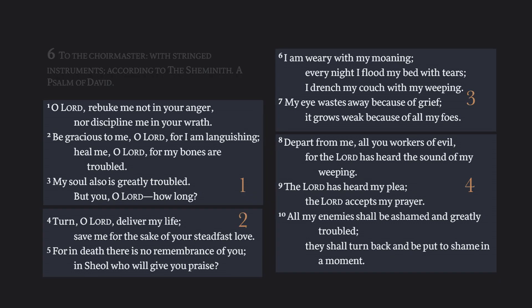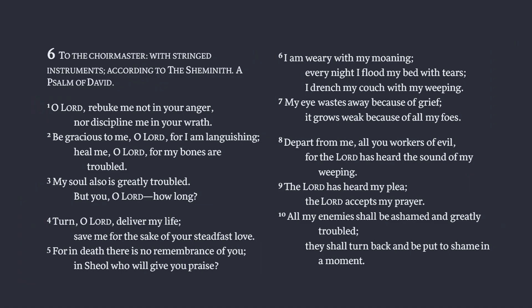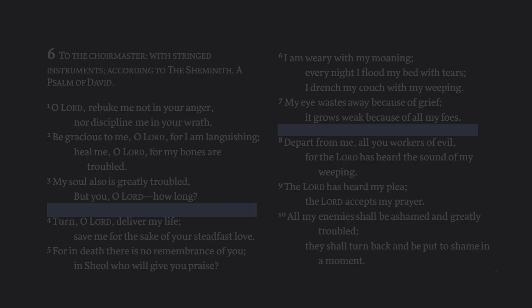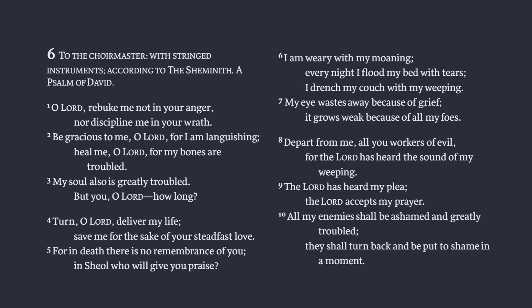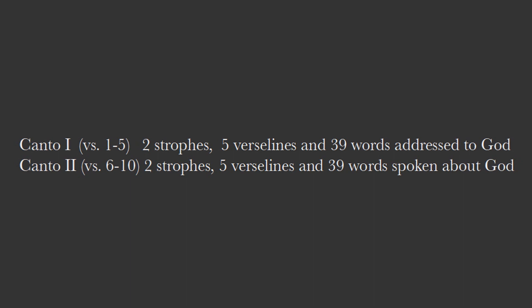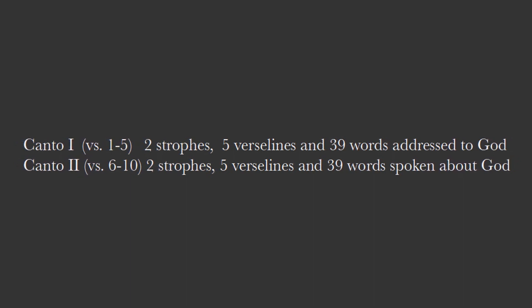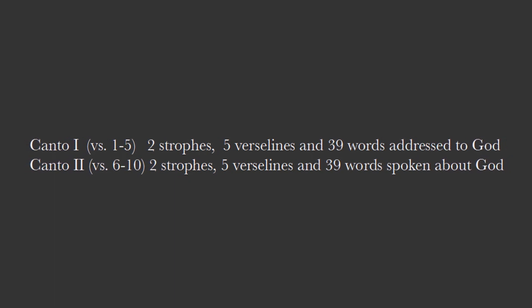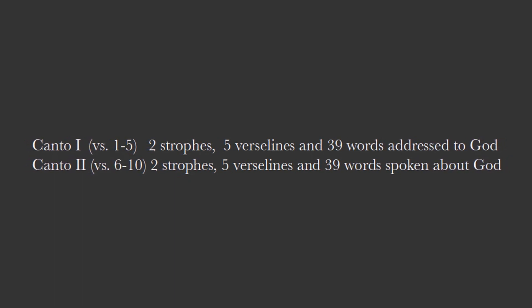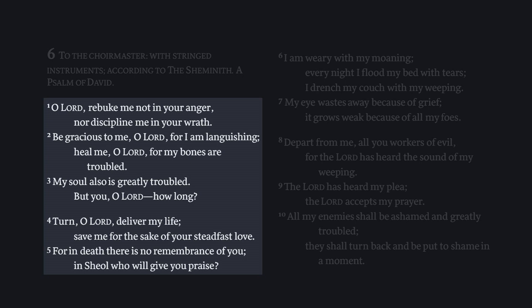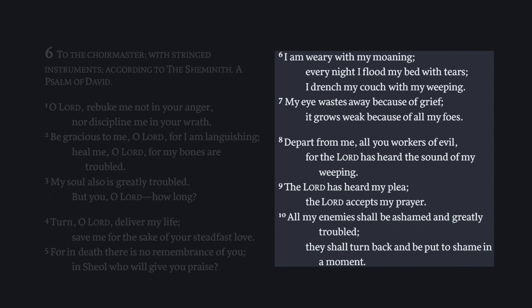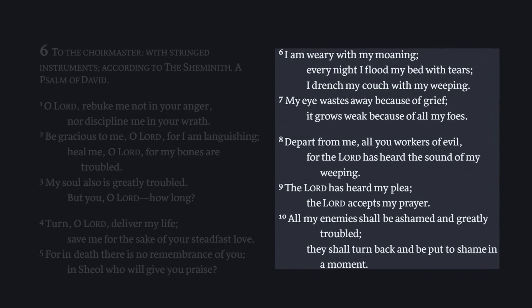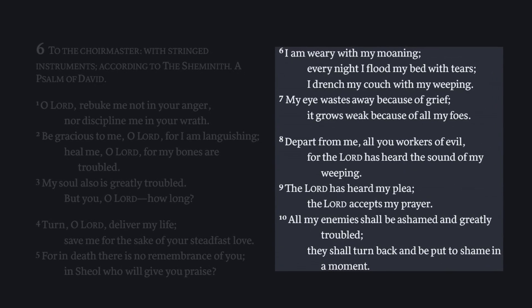It has four strophes — you can usually detect the strophes in your modern-day Bibles with a larger blank after a verse. Then there are 10 verse lines, basically verses, and 21 kola, which are lines. Essentially everybody divides the psalm exactly this way. Canto 1 is verses 1 through 5: two strophes, five verse lines, and 39 words. Canto 1 is addressed to God. Canto 2 shifts to verses 6 through 10: also two strophes, five verse lines, and 39 words.